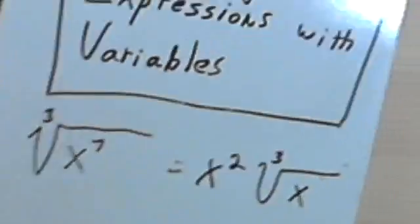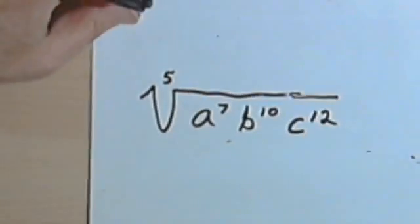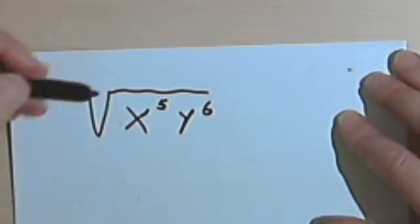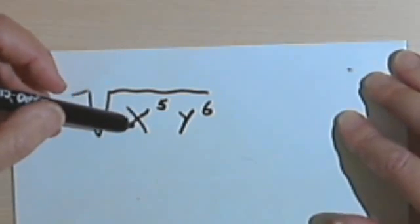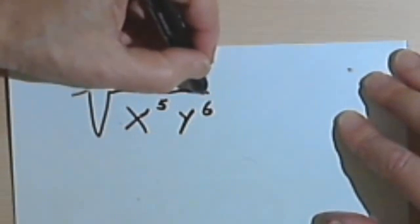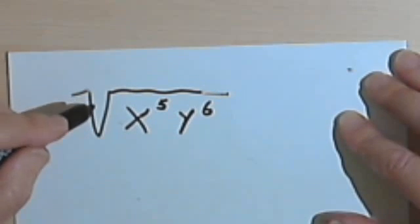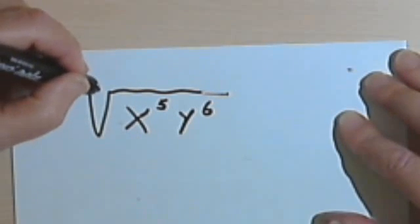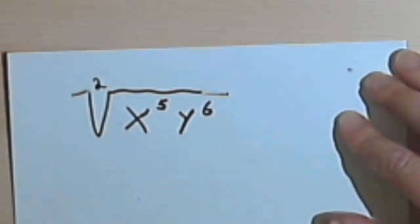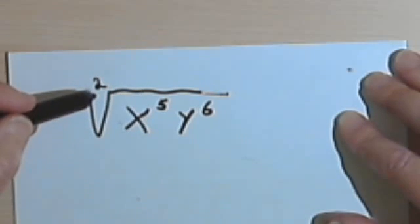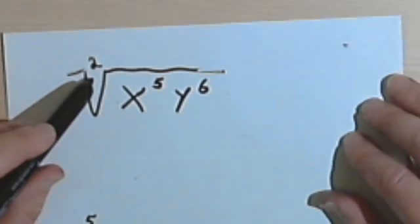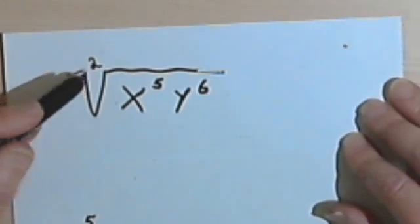Let's look at some more examples. Okay, so here we have the square root of x to the 5th, y to the 6th. You know that when we have the square root, there is a kind of invisible exponent. That's a 2. So we're going to take this index, that's a 2.